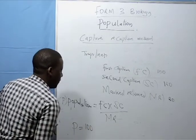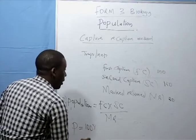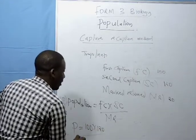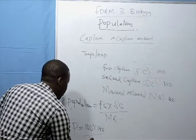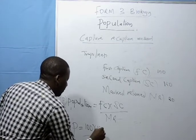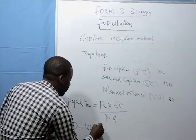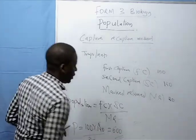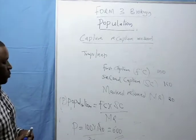100 first capture multiply by 120 second capture, divide by 20 marked returned. If that is done, you get 600. So the population of that fish pond is 600 fish.